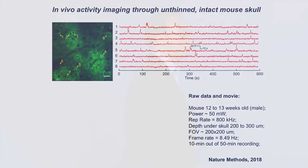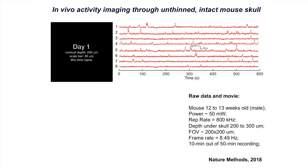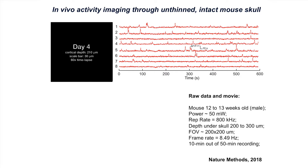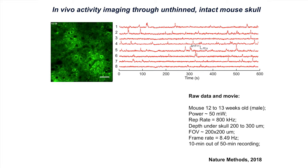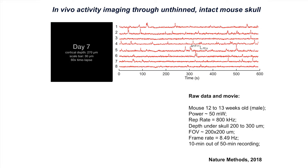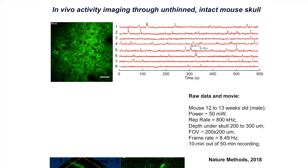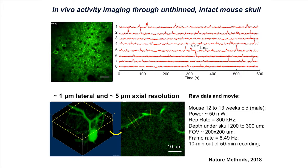We can also image through the intact bone — peel back the skin, leave the skull intact, and still achieve single-neuron resolution. Each donut shape is a neuron with a dark nucleus since the dye is only expressed in the cytosol. Neuronal activity can be recorded over eight to nine sessions across about five weeks. Lateral resolution is about one micron, axial resolution about five microns — more than sufficient for single-cell resolution through an intact mouse skull.